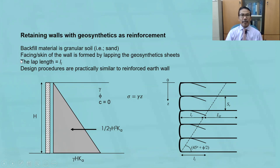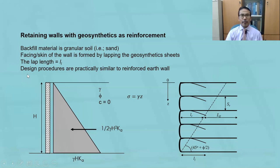Item number three is the lap length, equal to L sub L, measured from the facing of the retaining structure to the end of the geosynthetic sheet. Item number four is that the design procedures are practically similar to those for a reinforced earth wall.